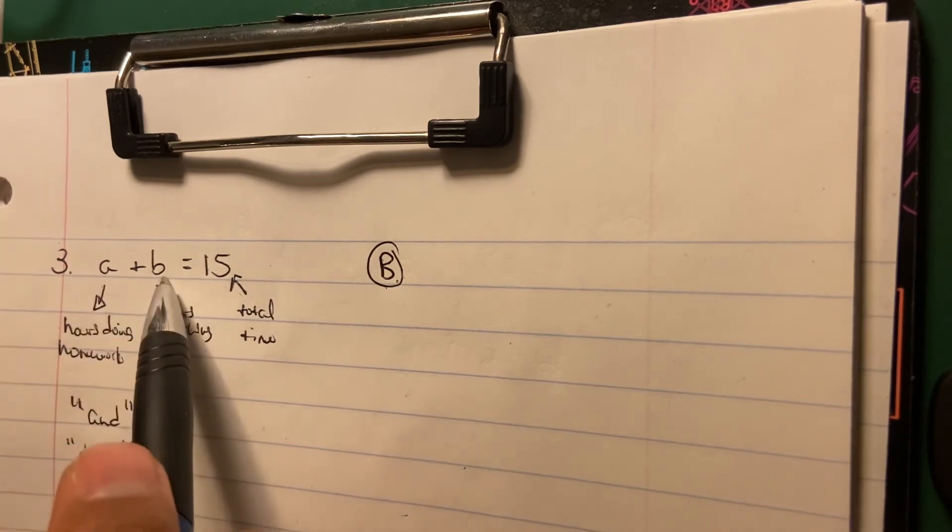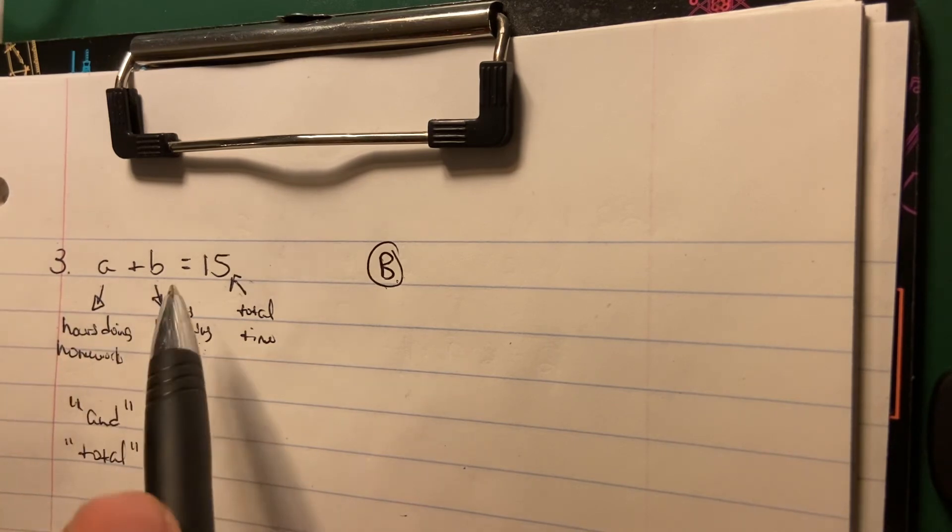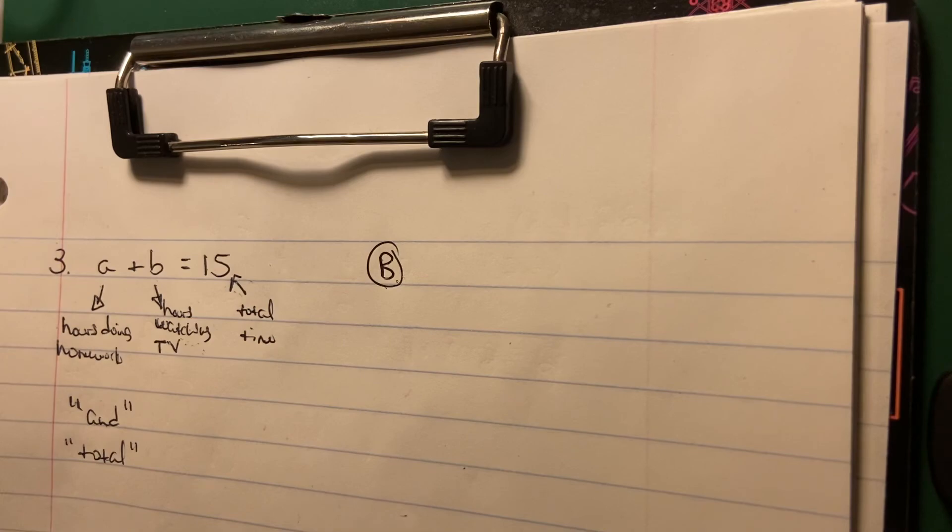Because it's A plus B equals 15 hours spent doing homework plus the hours spent watching TV yields a total of 15 hours for the week. Hope that helps.